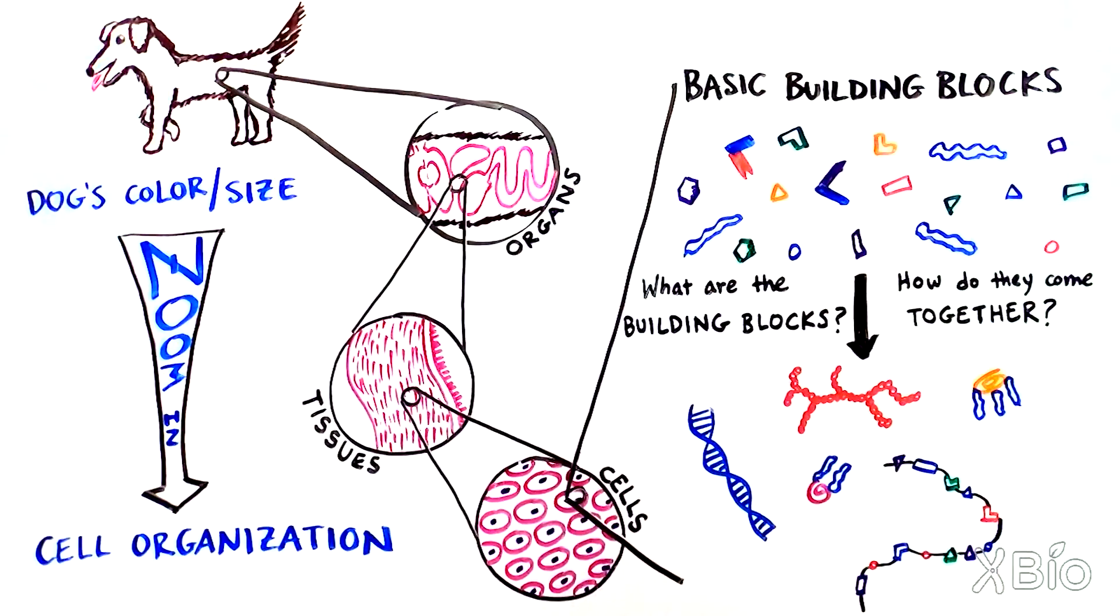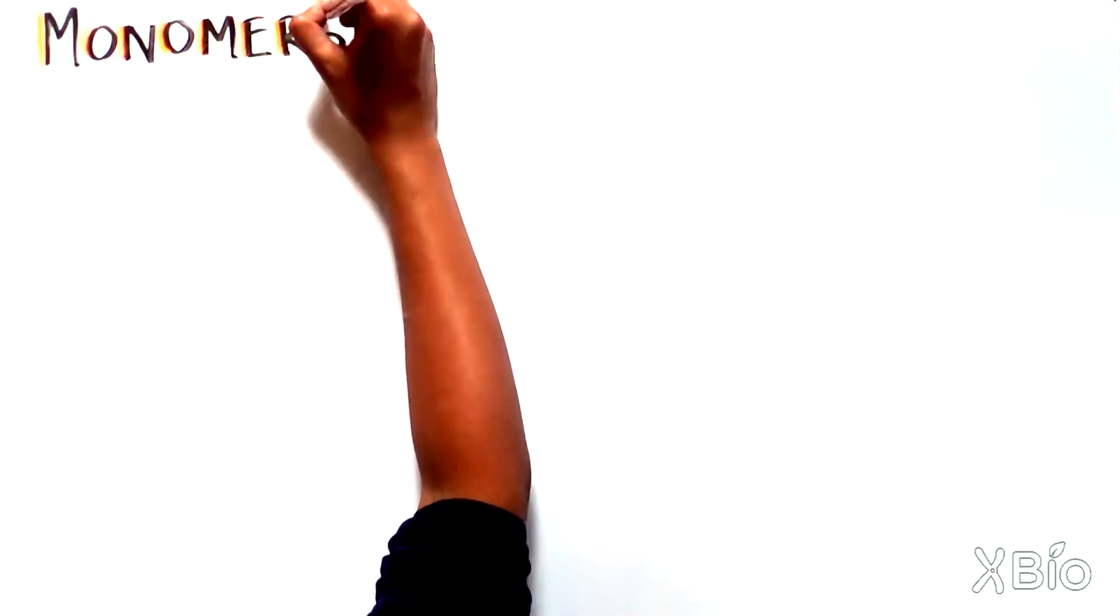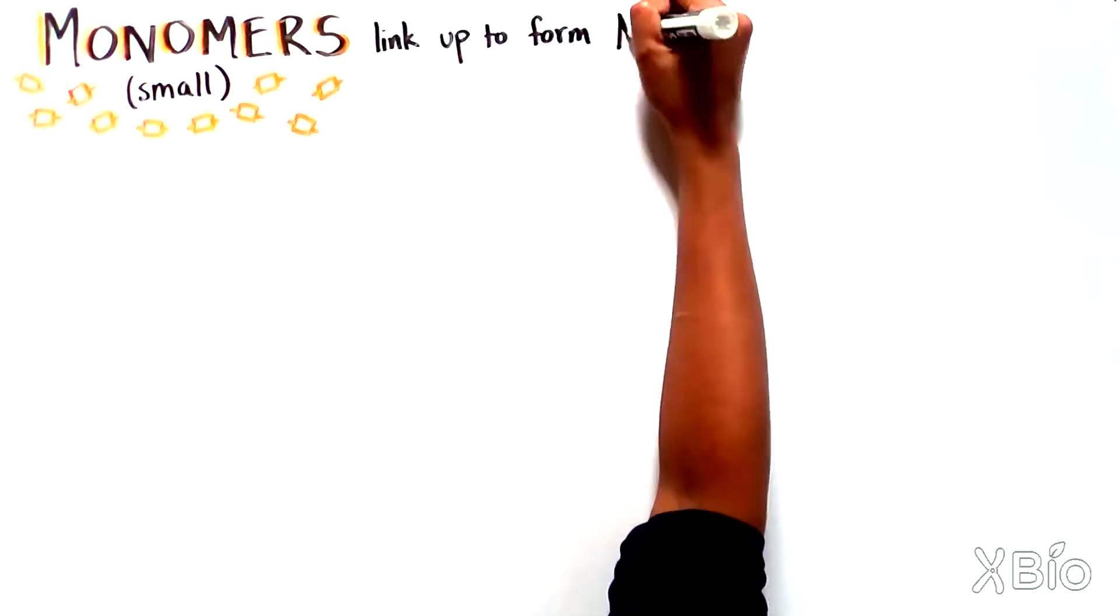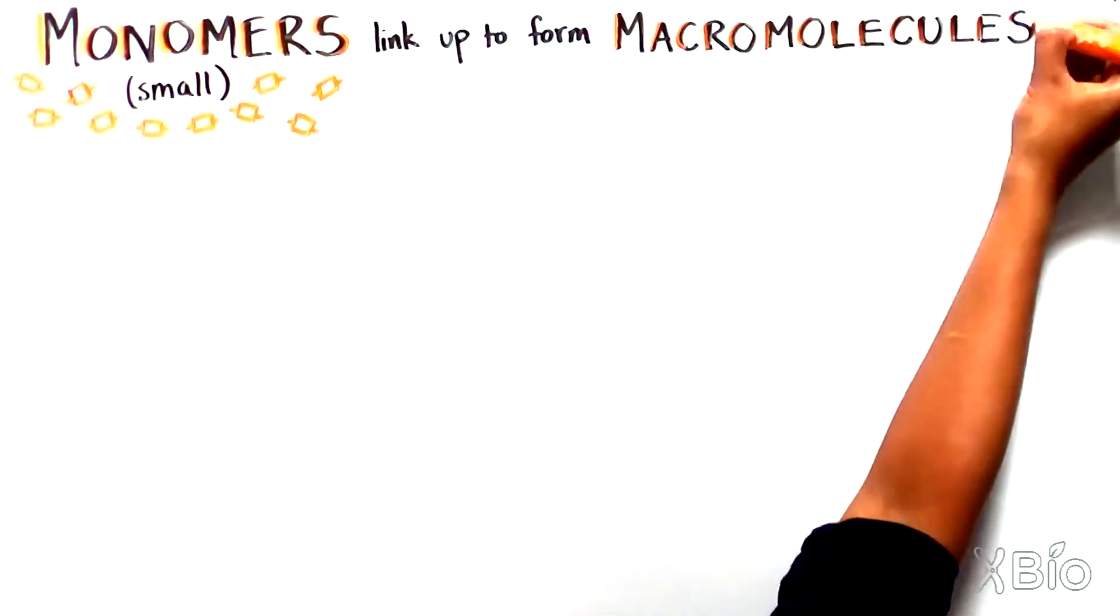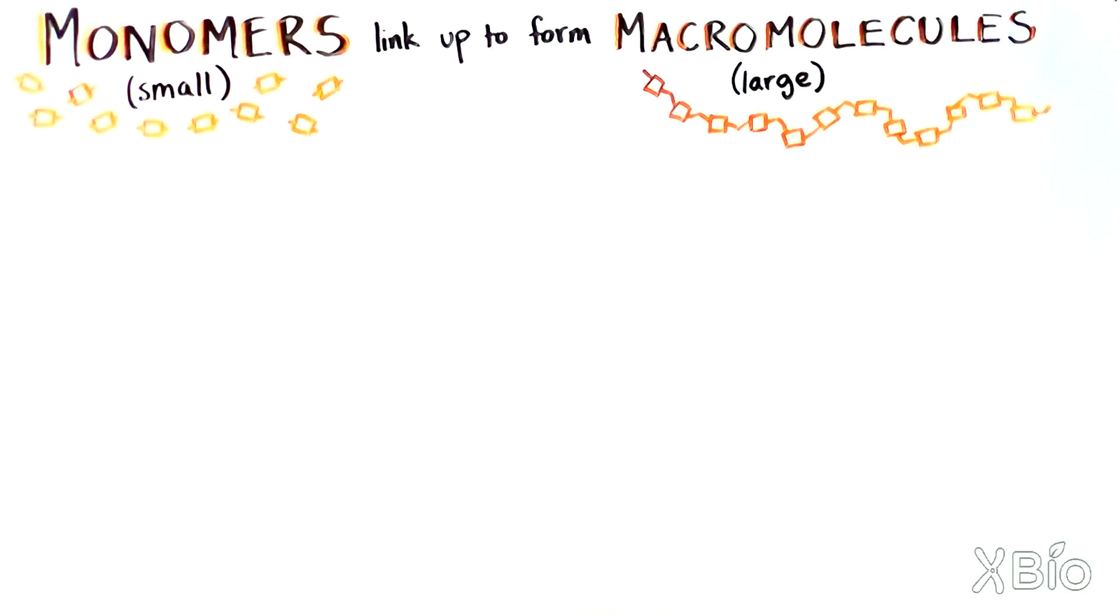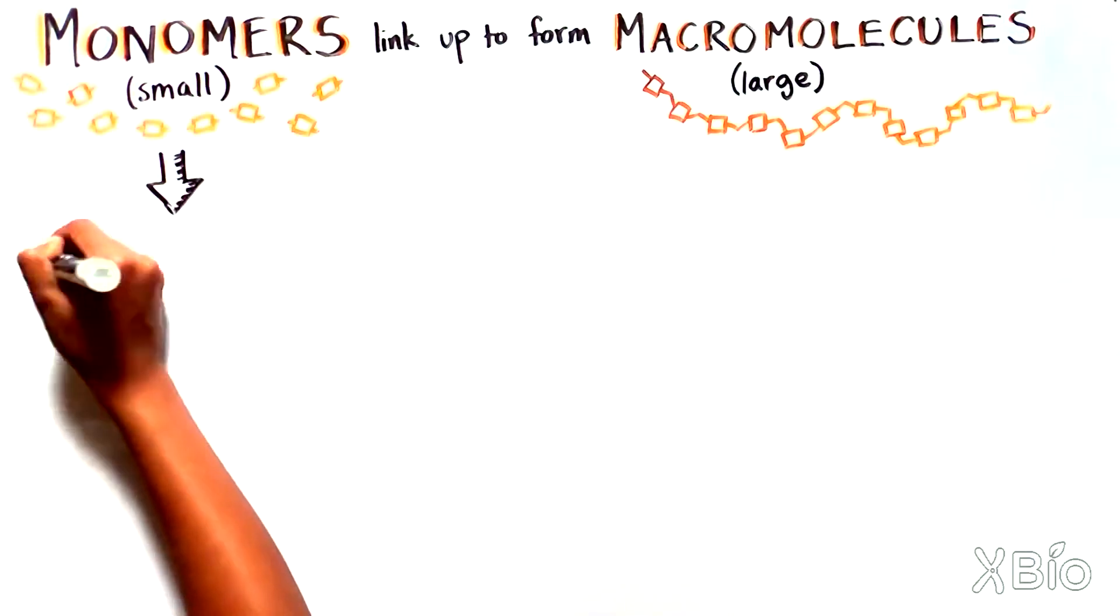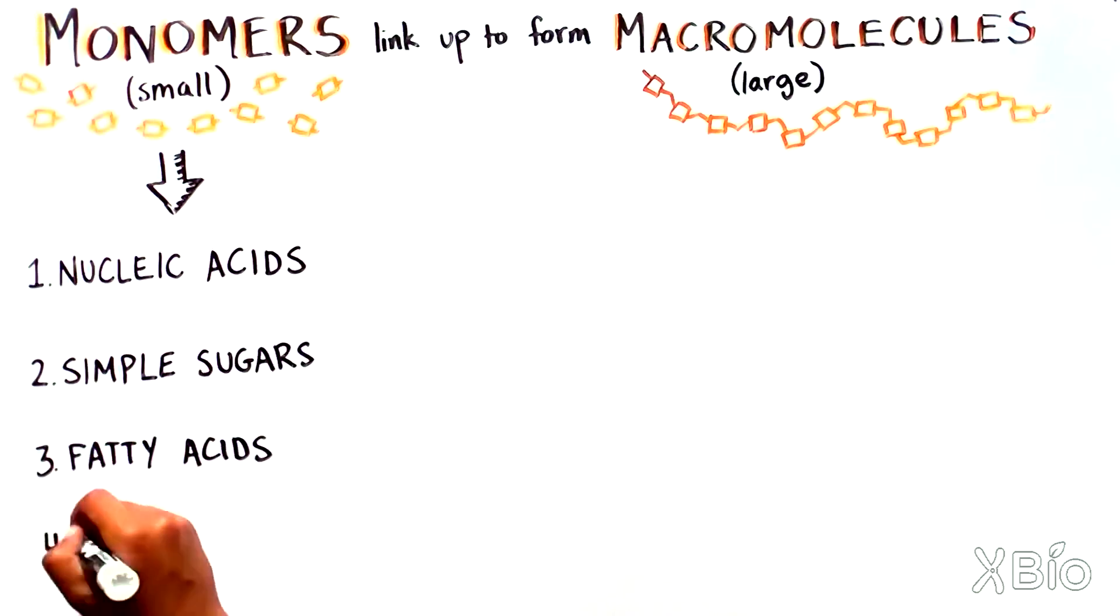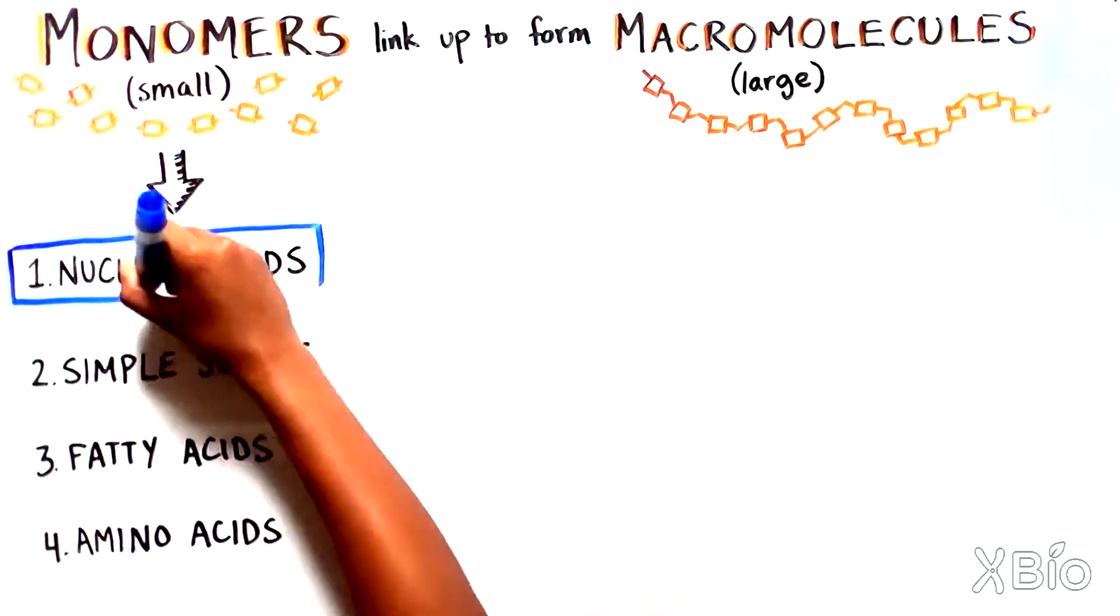Let's start small, with what are referred to as small molecules or monomers. These have important functions on their own, but can also link up like Lego pieces to form large or macromolecules. There are four main categories of small molecules: nucleic acids, simple sugars such as glucose, fatty acids, and amino acids.